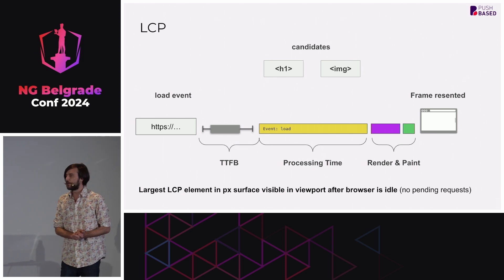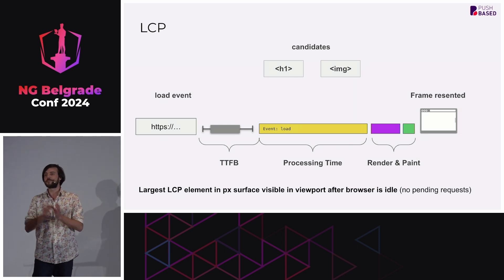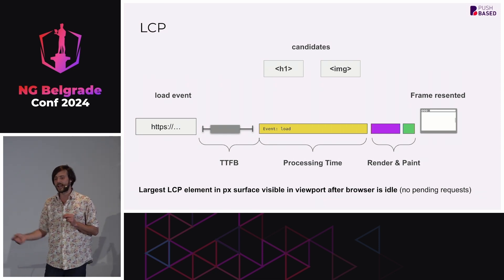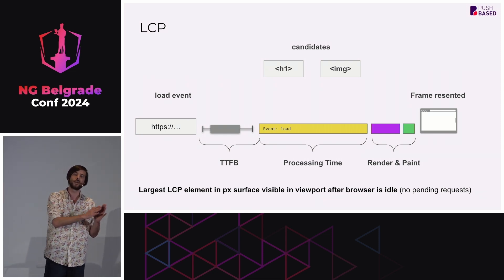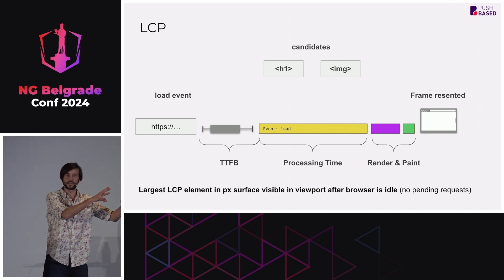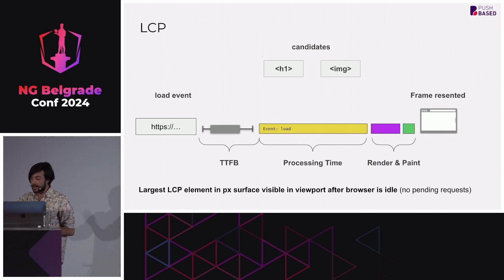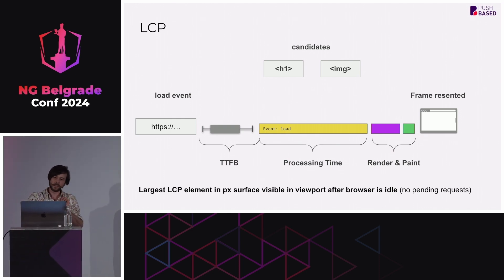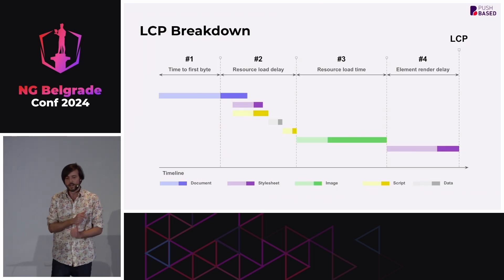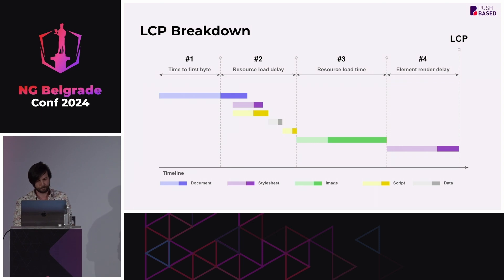The different technical phases of LCP are: Time to First Byte, processing time, rendering and paint, and then finally colored pixels on screen. This is plural candidates — over the loading time you can have multiple LCP candidates. First the browser thinks it's the text, then a bigger image pops in, and that image becomes the LCP candidate. Then we can break it into four phases: time to first byte, resource load delay, resource load time, and element render delay.